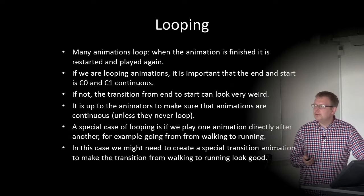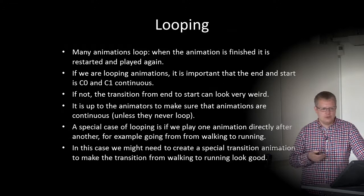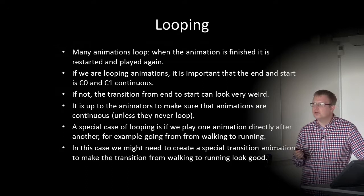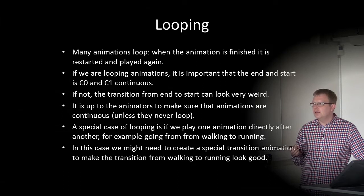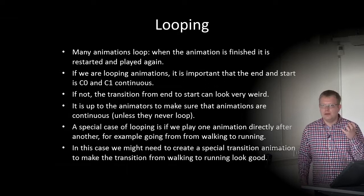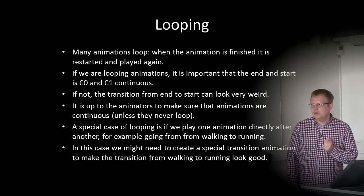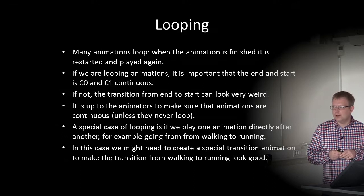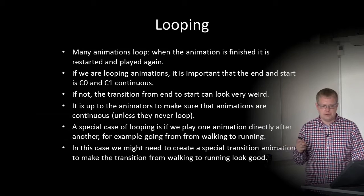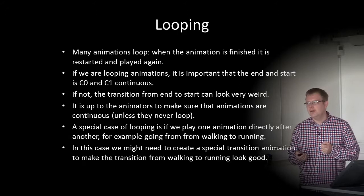Many animations loop — when the animation is finished, it restarts and plays again, such as running, jumping, or walking. For looping animations, it's important that the end and start are C0 and C1 continuous; otherwise the transition from end to start can look very weird. A special case is playing one animation directly after another — for example, going from walking to running. In this case, we may need to create a special transition animation to make the transition look good.